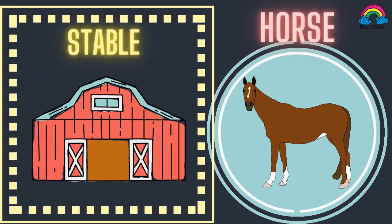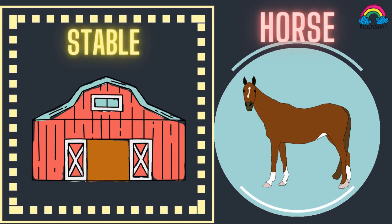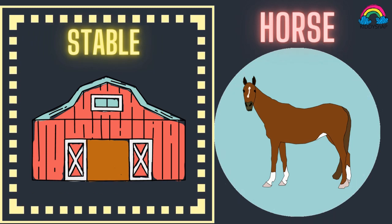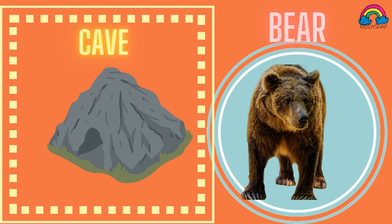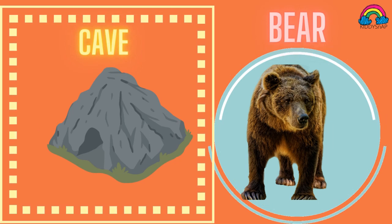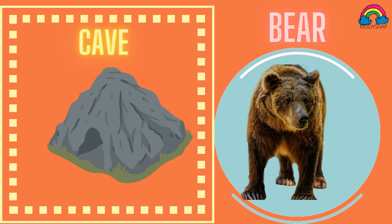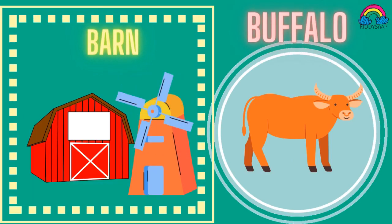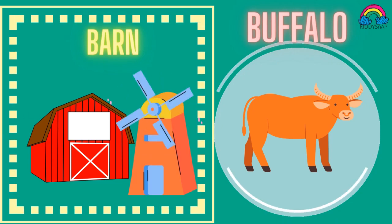Horse lives in a stable, so the house of a horse is a stable. Bear lives in a cave, so the house of a bear is a cave. Buffalo lives in a barn, so the house of a buffalo is a barn.